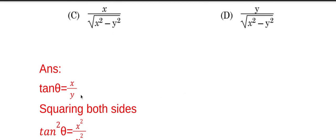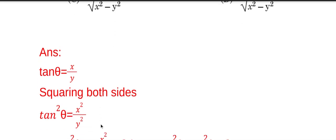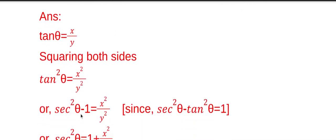Given tan theta equal to x by y, and squaring both sides, tan square theta equals x square by y square. Now applying the formula sec square theta minus tan square theta equal to 1, therefore tan square theta equals sec square theta minus 1, that is equal to x square by y square.